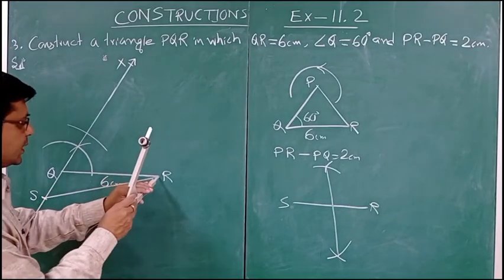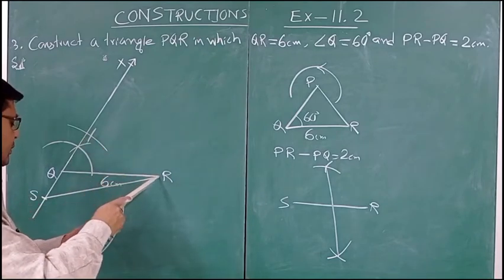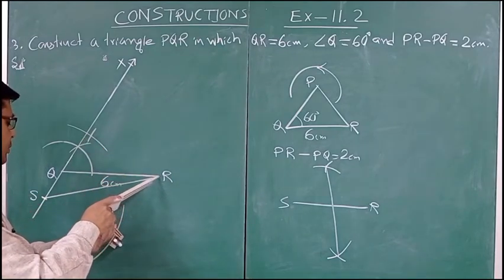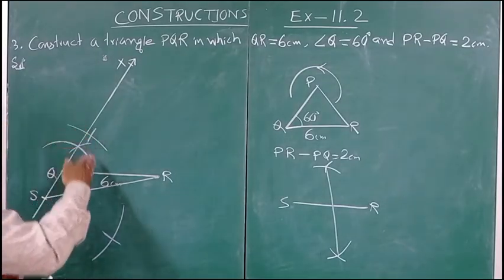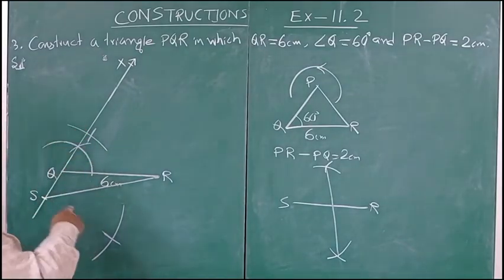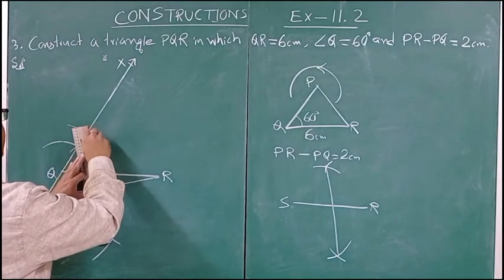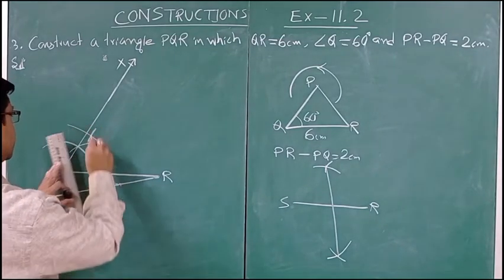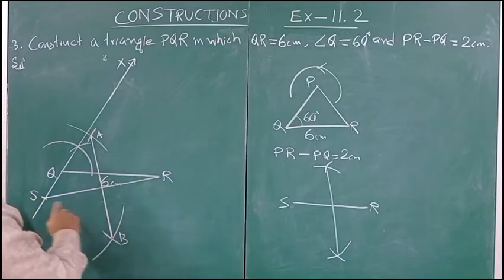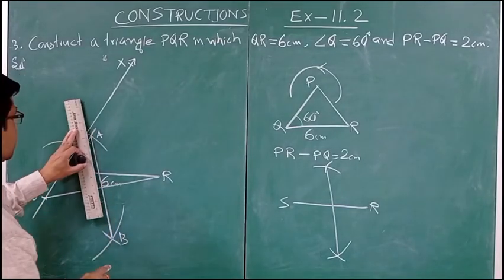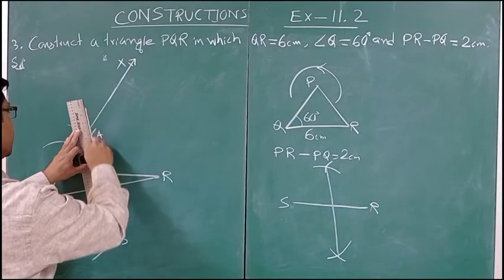Put the compass at R and draw the arc above and below — please don't change the radius. Now let us join the two intersection points to get the perpendicular bisector of SR. Let us call this line AB; AB is the perpendicular bisector of SR.